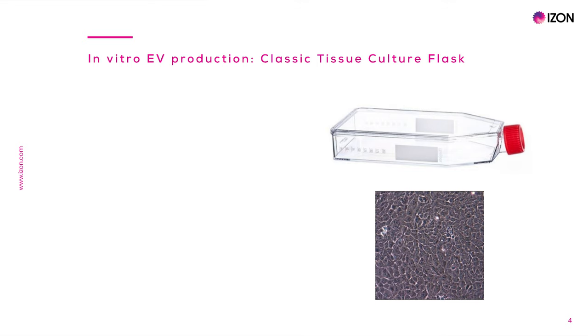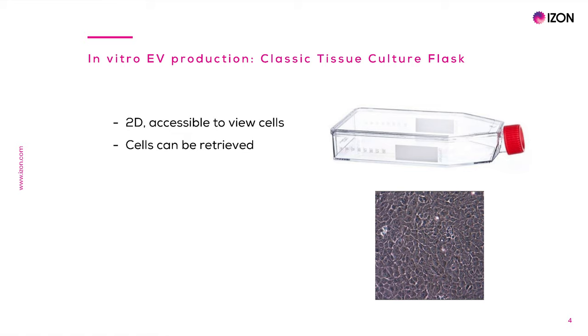Cell culture is the initial step in isolating EVs from CCM. The classical way to culture cells is growing them in 2D culture flasks, where cells grow adhered as a monolayer to the bottom surface or in suspension in the medium. An advantage of using these flasks is that cells are easily monitored while growing to follow indicators of cell death, cell density, or contamination. Cells can also be fully retrieved for easy enumeration and health assessment at different time points, and placed back into another flask for further growth.